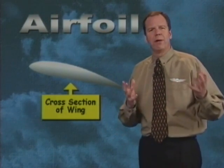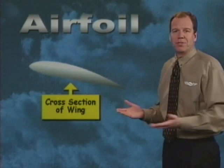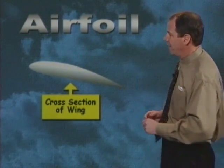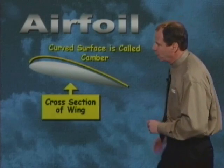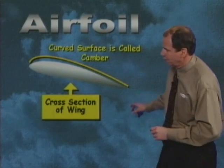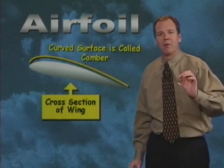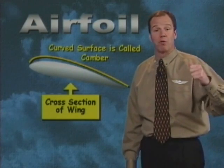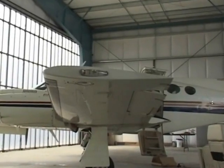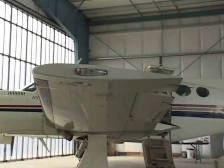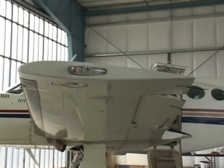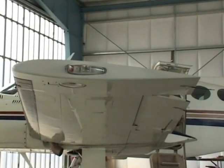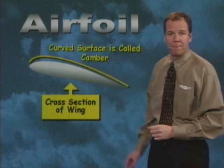What differentiates an airfoil from, say, a piece of plywood? Well, the airfoil has a cambered or curved surface right here. This curved surface we call a cambered surface. The camber, as you remember from your private pilot studies, is the amount of curvature something has — in this case, the upper and lower surfaces of the wing, right here.